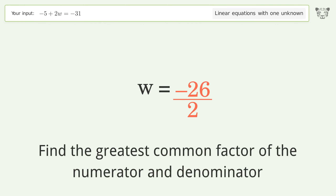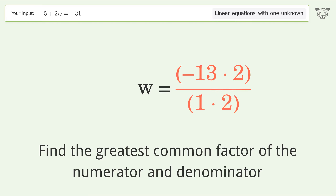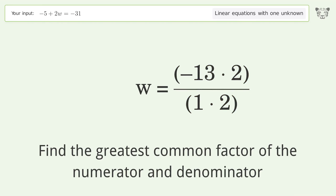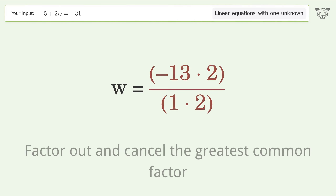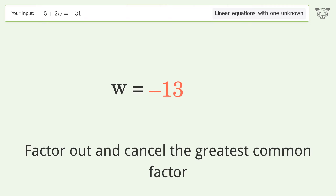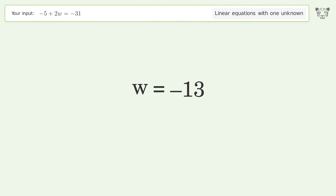Find the greatest common factor of the numerator and denominator, then factor out and cancel the greatest common factor. And so the final result is w equals negative 13.